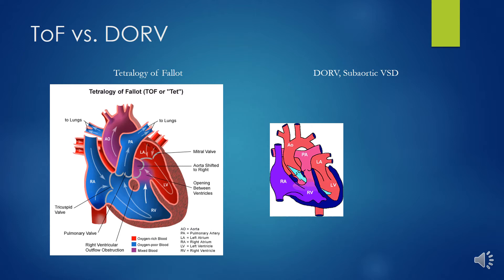With RVOT obstruction, the presentation is similar to tetralogy of Fallot, where a subaortic malalignment VSD is also present. Without infundibular pulmonary stenosis, the physiology is similar to that of a large VSD with heart failure secondary to pulmonary over-circulation.